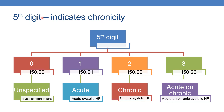The 5th digit indicates chronicity: 0 indicates unspecified, 1 indicates acute, 2 indicates chronic, and 3 indicates acute on chronic. So for the I50.2 systolic series: I50.20 is unspecified systolic heart failure, I50.21 is acute systolic heart failure, I50.22 is chronic systolic heart failure, and I50.23 is acute on chronic systolic heart failure.